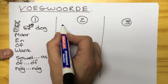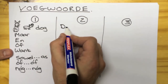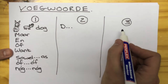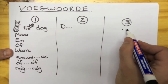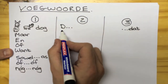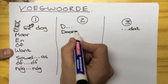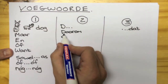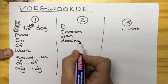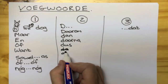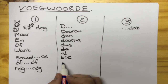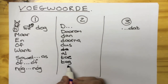In group 2, you can remember it by: group 2 contains all the D words except for doch and dat. Doch belongs to group 1, and dat belongs to group 3. Here's a list of group 2 conjunctions: daarom, dan, daarna, dus, al, toe, toch.